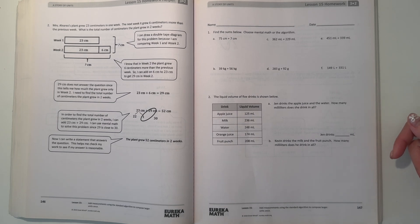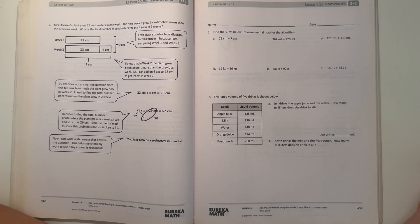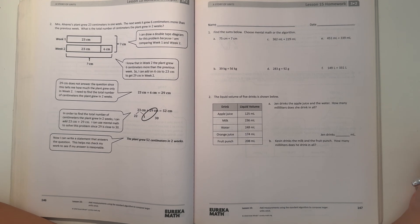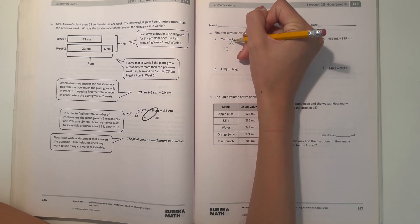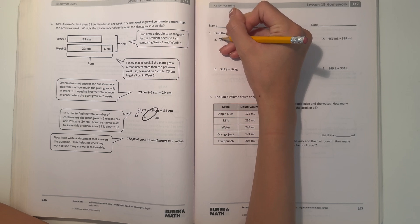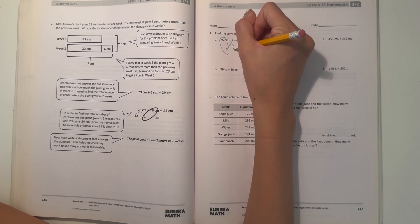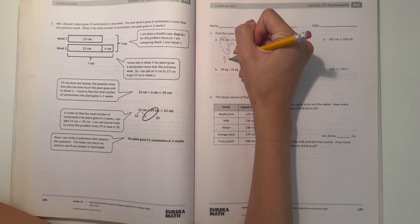We have 75 centimeters plus 7 centimeters. Let's try mental math. We know 75 needs 5 more to reach the next 10, so we can break apart 7 into 5, which gives us 2 left. 75 plus 5 is 80, and then plus 2 is 82, which means 75 plus 7 is 82 centimeters.